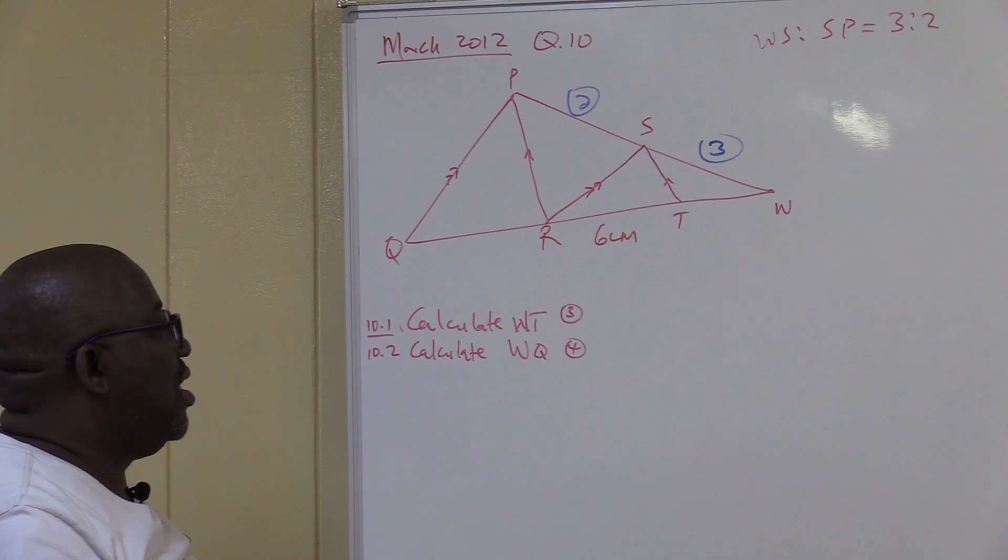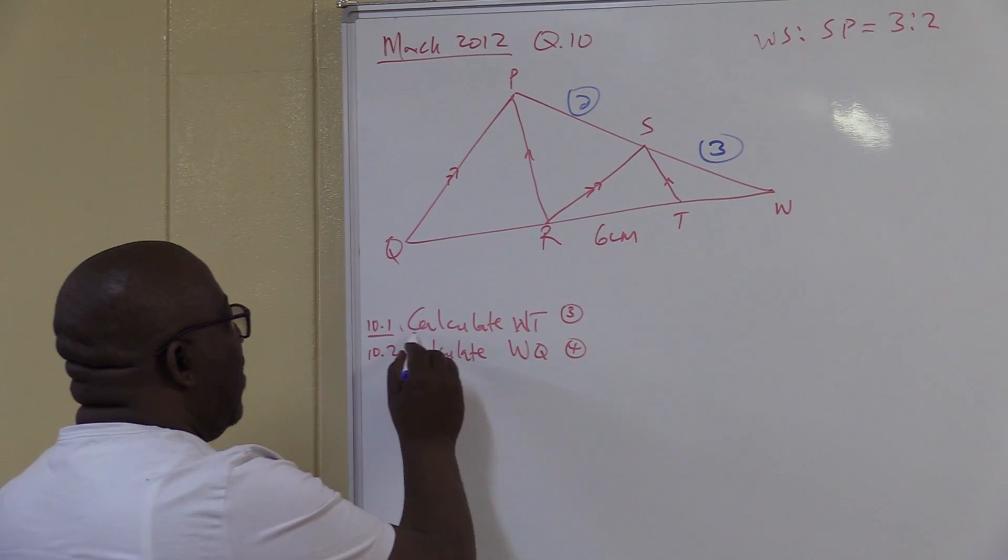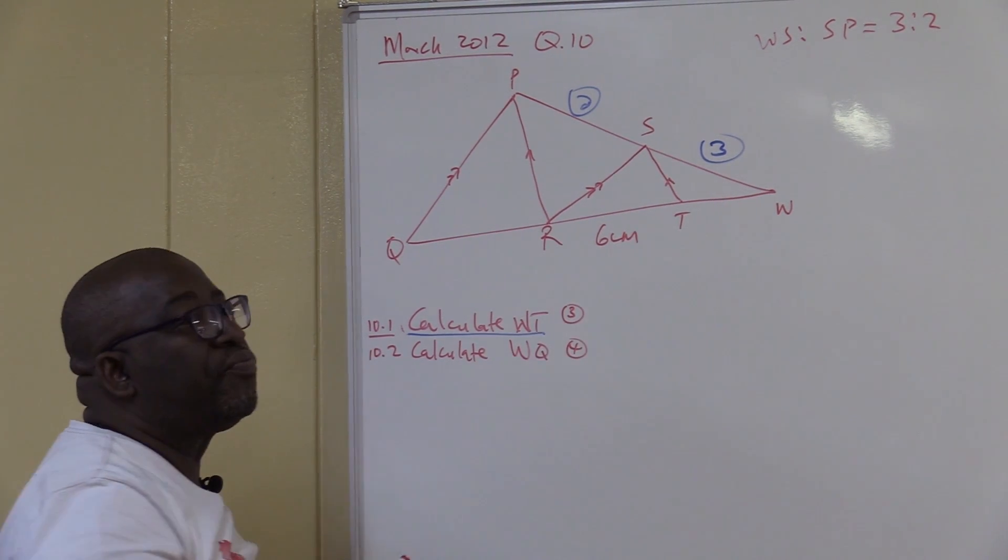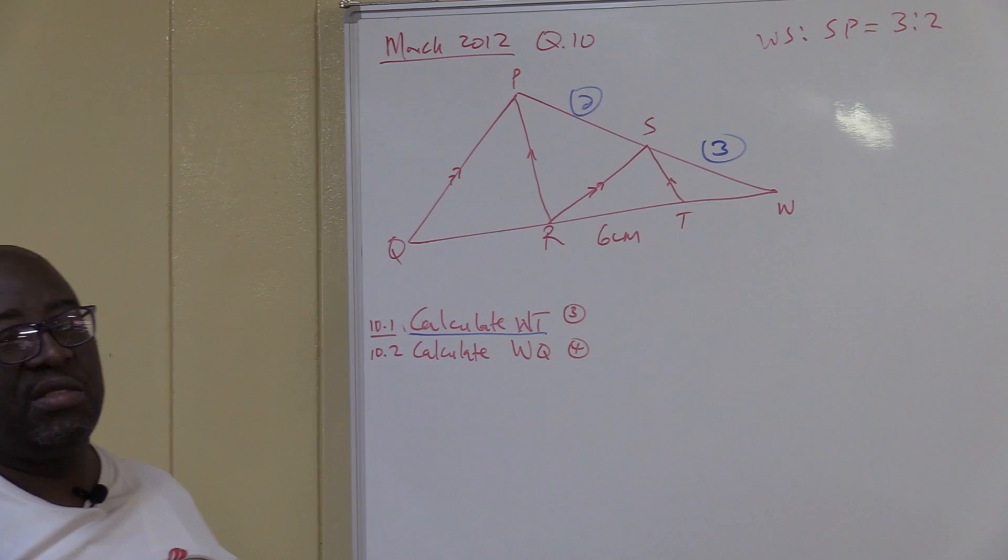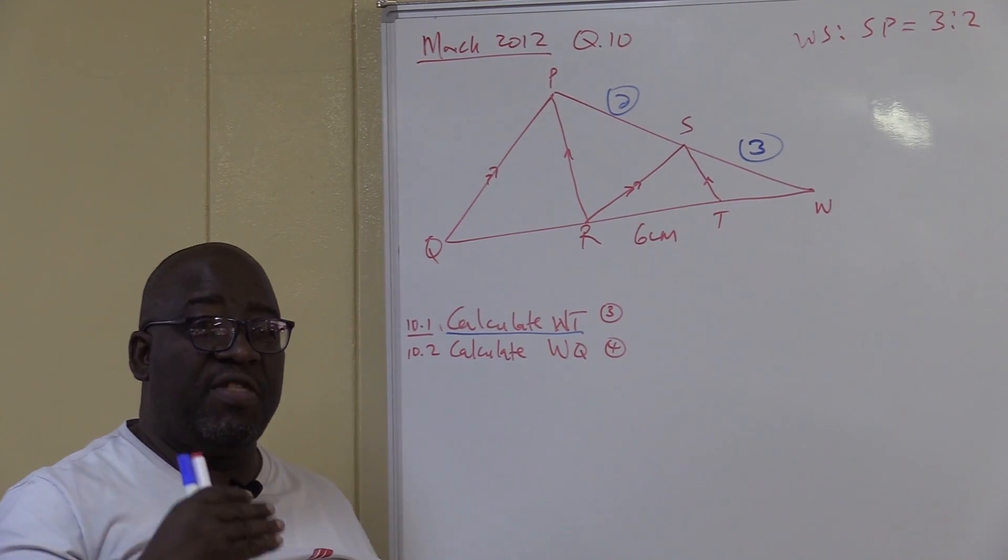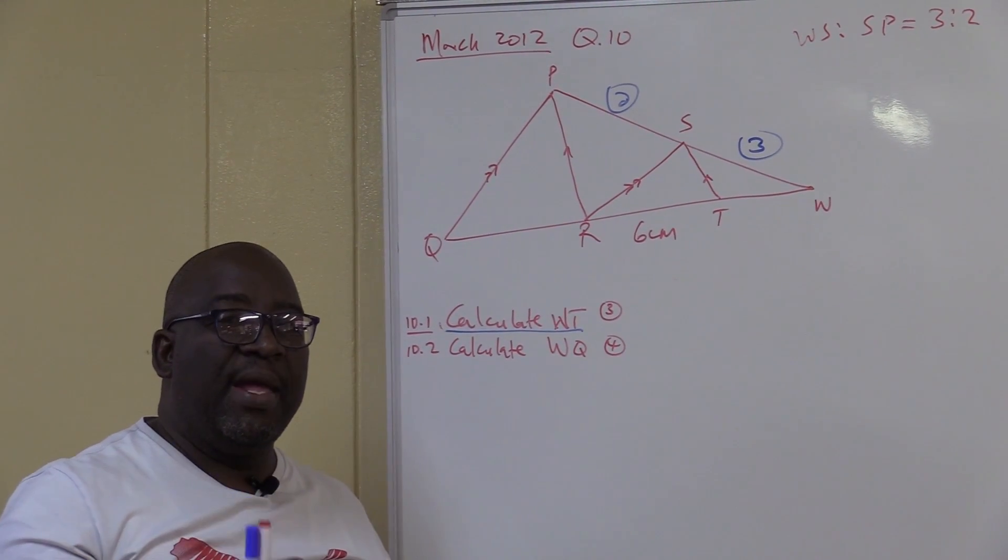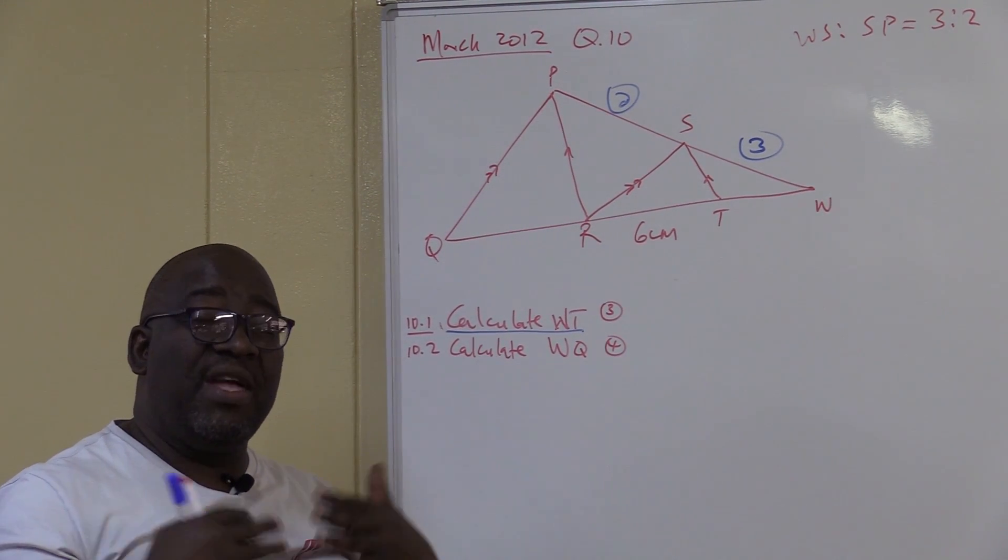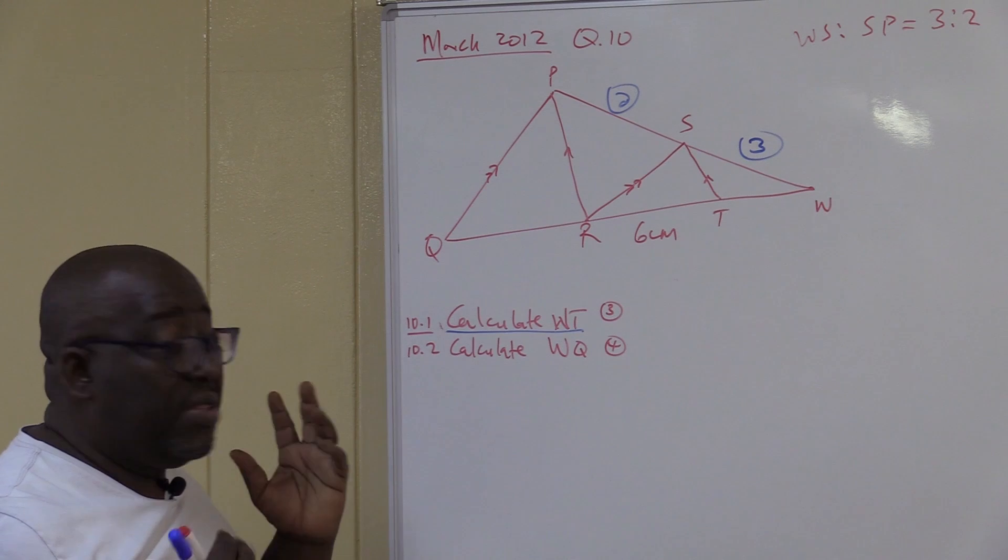The first question is calculate WT. Let's find WT. Where is WT? WT is here. There are a number of parallel lines. Whenever we see parallel lines, think of the proportionality theorem. A line drawn parallel to one side of a triangle divides the other two sides proportionally. That's the key.